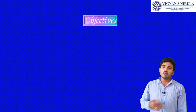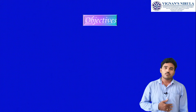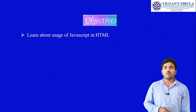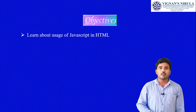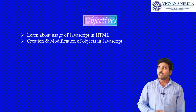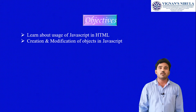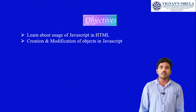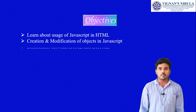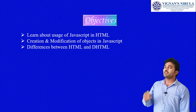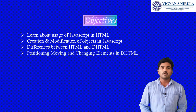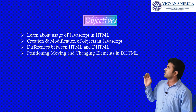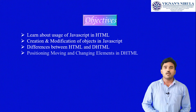The objectives to be discussed are: first, learn about the usage of JavaScript in HTML; second, creation and modification of objects in HTML; third, the differences between HTML and DHTML; and fourth, positioning, moving and changing elements in DHTML.